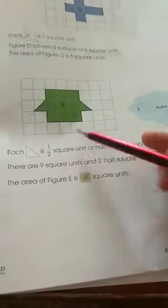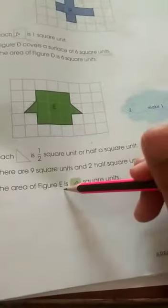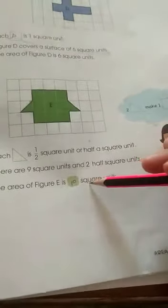So, total it will be 10. 9 plus 1, 10. So, the area of figure E is 10 square units. In this way, you will do it like this.